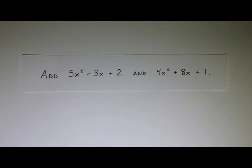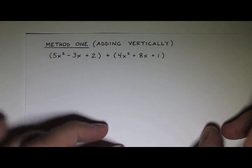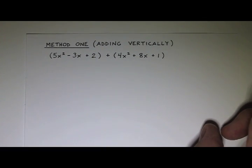So there's two methods that we're going to use for adding polynomials. Method 1 is called the vertical method. We're going to add them vertically. And just like the name sounds, we're going to put them one on top of the other.